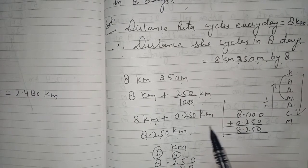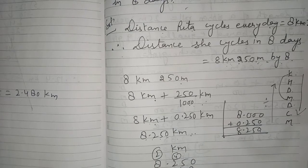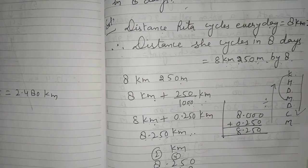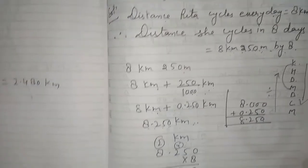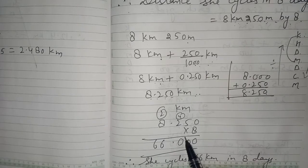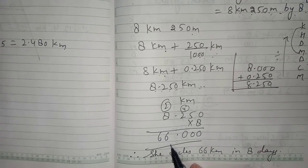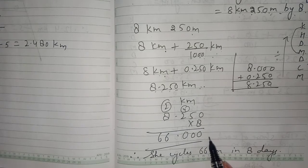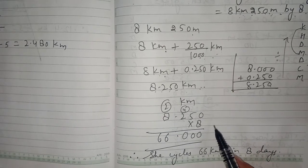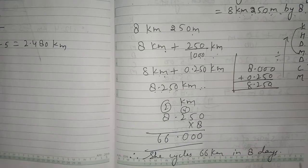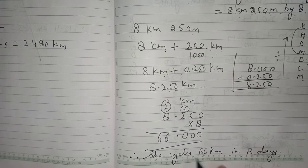Now we multiply 8.250 by 8 to find how much she cycles in 8 days. After multiplication, 8.250 × 8 = 66.000, which is 66 kilometers. The multiplication method is the same as in the first question. So Rita cycles 66 kilometers in 8 days.